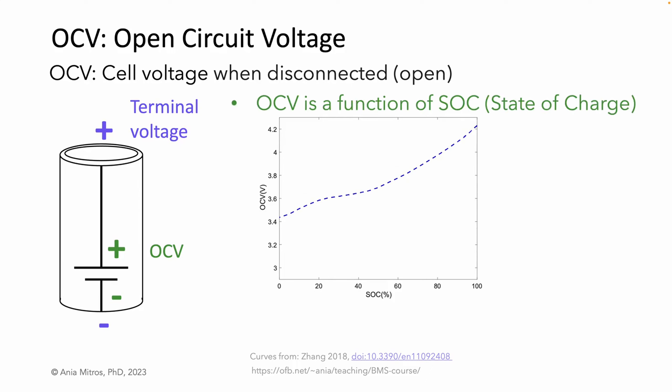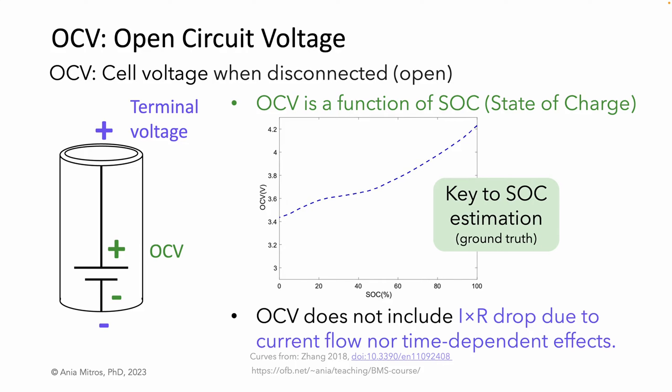OCV is a function of state of charge. In this plot, OCV is on the y-axis and state of charge is on the x-axis. Indeed, OCV is key to state of charge estimation — OCV is our ground truth. We'll talk about that more in the lecture on SOC estimation algorithms. OCV does not include the instantaneous IR drop due to current flow, nor various time-dependent effects that we'll discuss in a few slides.